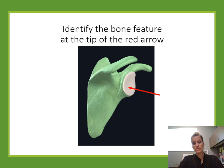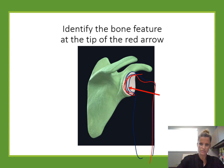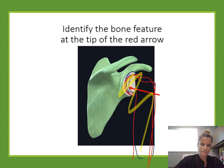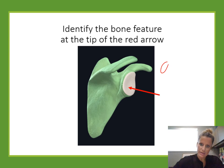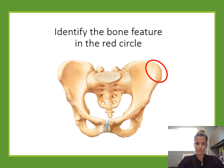Identify the bone feature. This is the scapula — the shoulder blade — where we form the shoulder joint. Right here is the depression where the head of the humerus fits to form the shoulder. That depression is called the glenoid cavity.